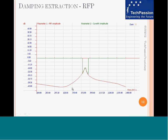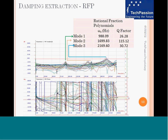Looking at one FRF for the connecting rod, the plot in green is from curve fitting and the plot in red is the measured data. The procedure is repeated for multiple modes: the first, second, and third modes. The corresponding resonant frequencies and Q factors for all three modes are listed in a table.